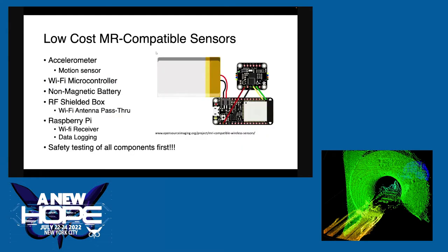The year before, this is my colleague's work: we used an accelerometer, which measures acceleration, as a proxy for motion, and a wireless microcontroller. We found a non-magnetic battery, so we could transmit real-time motion signals to a Raspberry Pi over Wi-Fi. This one's also wireless, which is really important because wires can cause heating and burns if you're not careful. So wireless is really ideal. We have to do a lot of magnetic safety testing — we test each part individually before we even go in the room with it.